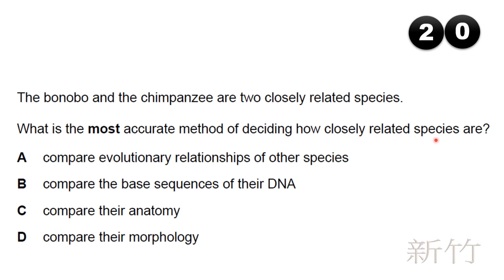The bonobo and the chimpanzee are two closely related species. What is the most accurate method of deciding how closely related species are? Options: A) compare the evolutionary relationship with other species; B) compare the base sequence of the DNA; C) compare the anatomy; D) compare the morphology. The answer is B: compare the base sequence of the DNA.